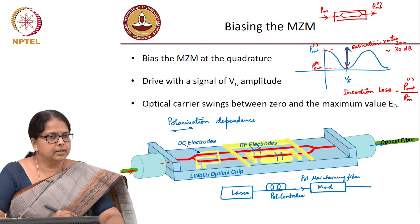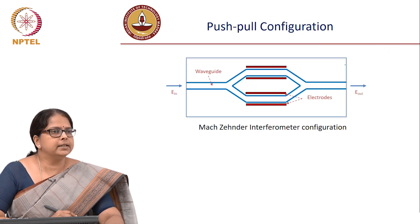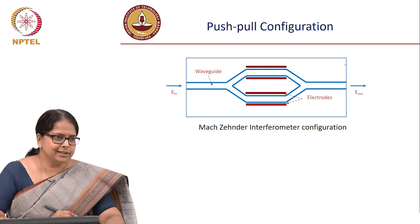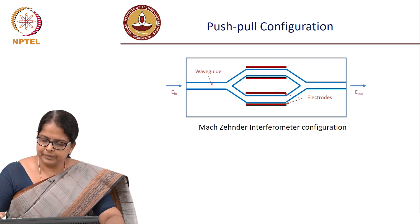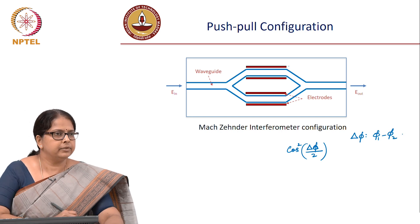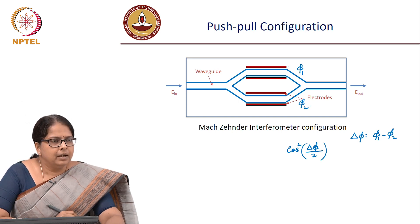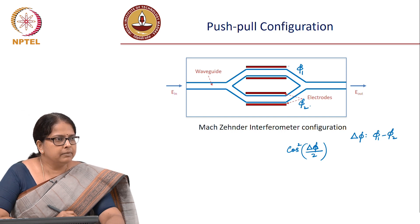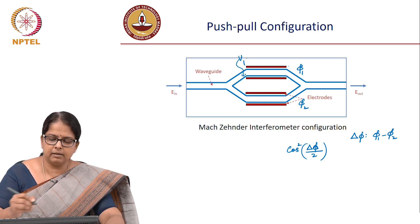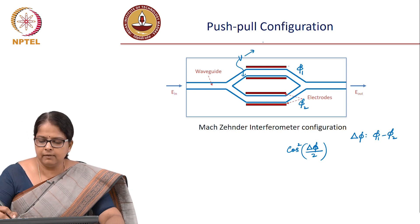This is about intensity modulation. You can also use this intensity modulation in what is called a push-pull configuration. Your output is proportional to cos squared of (Δφ/2), where Δφ is the phase difference between φ1 and φ2 — φ1 is the phase introduced in one arm and φ2 is the phase introduced in the other arm. Previously, voltage V was applied only in one arm to give a phase shift of Δφ.